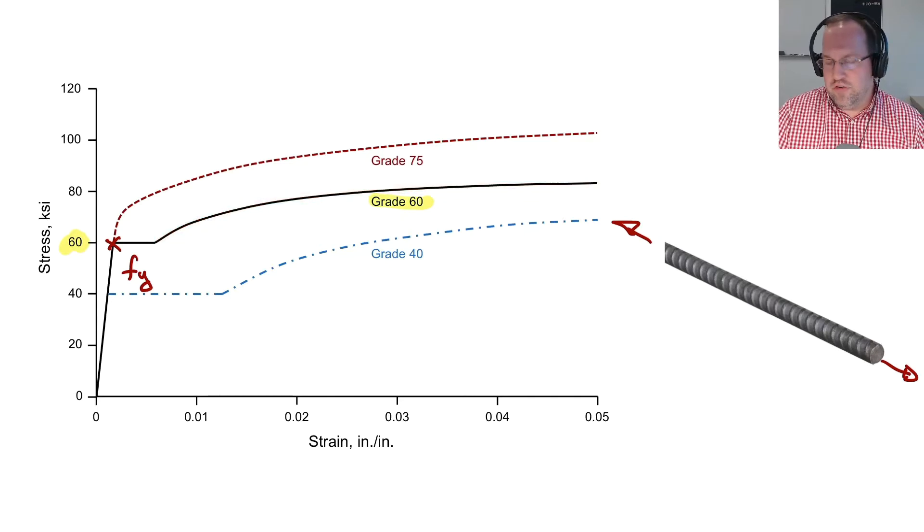Contrasted with higher stress steels that often just have a roundhouse type curve, not a definitive yield plateau, and then it continues to harden up until ultimate fracture. Now one of the main advantages of steel that we're going to take advantage of in our reinforced concrete structure is the fact that steel is highly ductile, which means that it can sustain a very large strain after it hits its yield way back here and that will give our concrete structure the necessary ductility to make it a desirable building material.